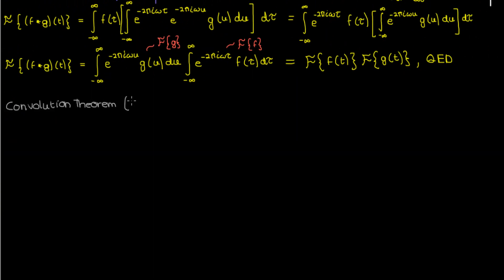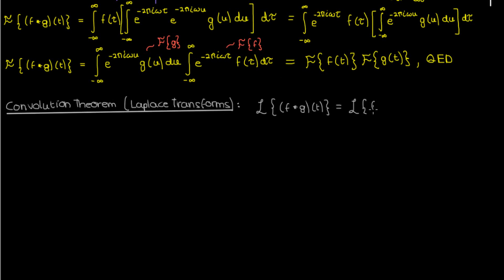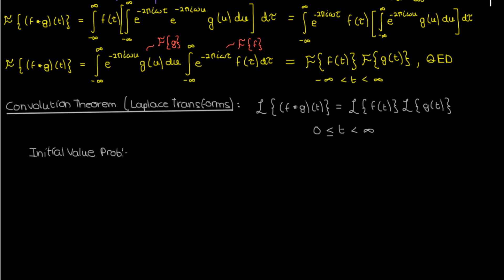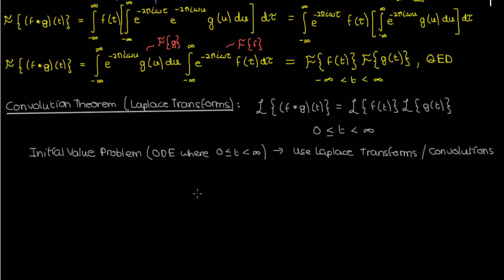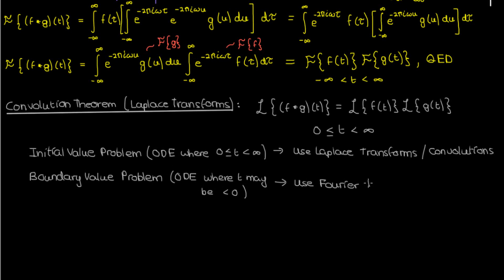Just before I end, let me put in a quick word for Laplace transforms and their convolutions. Laplace transforms also have their own convolution theorem — it's pretty much the same as for Fourier transforms, except for Laplace transforms the independent variable t goes from 0 to infinity, whereas for Fourier transforms t goes from negative infinity to infinity. So if you're solving an initial value problem — an ODE in time starting at 0 — use the Laplace transform and its convolution theorem. If you're solving a boundary value problem where the independent variable can be negative, it's better to use Fourier transforms and their corresponding convolution theorem.